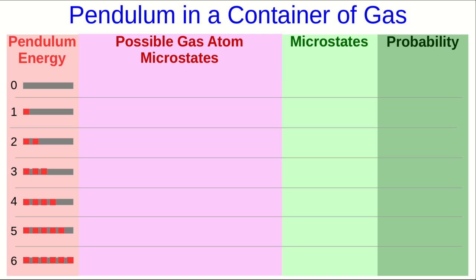Here are all of our possible macrostates. The pendulum can have any energy in integer steps from zero to six. And let's now start tabulating all the possible microstates, which are going to correspond to how the rest of the energy is split up among the atoms.